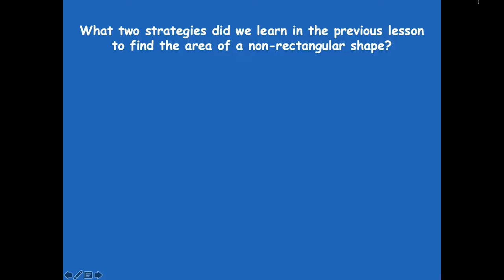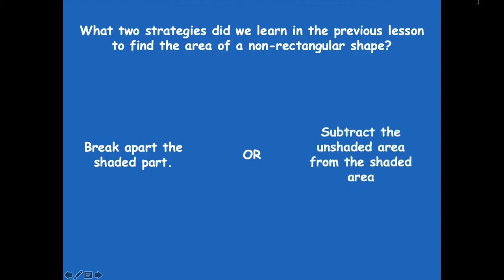So what two strategies did we learn in the previous lesson to find the area of non-rectangular shapes, or those composite shapes? One way is to break apart the shaded part into two different parts, find the area of each, and then add the area of each one to find the total area of the shaded part. Or we learned how to subtract the unshaded area from the shaded area — finding the whole area of the square or rectangle, and then subtracting the smaller piece that is not shaded.